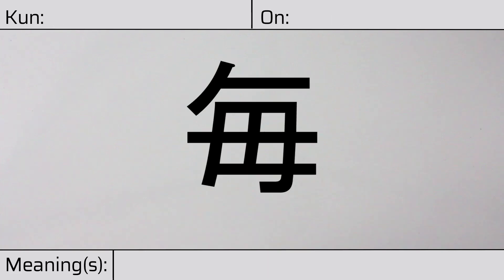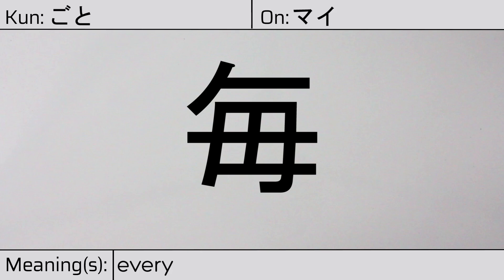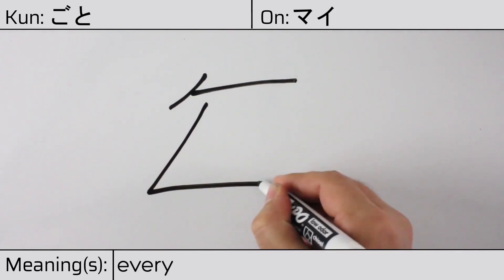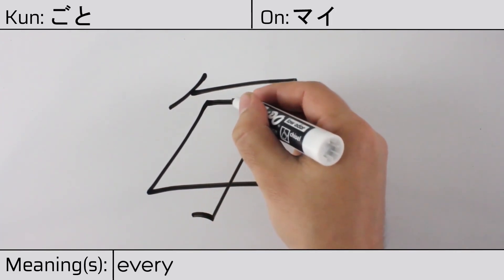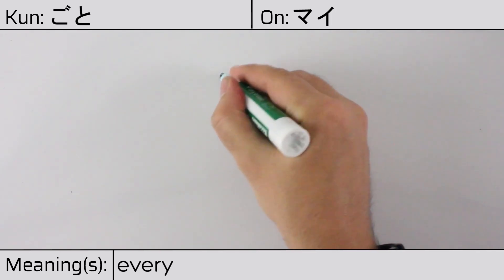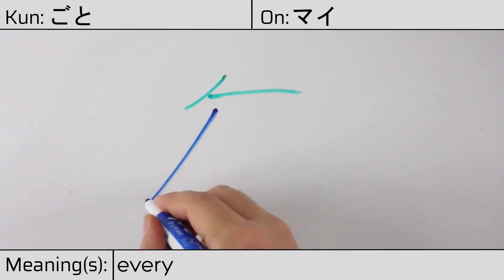Welcome to this lesson on Japanese kanji. Today, we'll be discussing this character. This kanji has a kunyomi or Japanese reading of goto, and it has an onyomi or Chinese reading of mai. This character has the meaning every. Here is the stroke order.